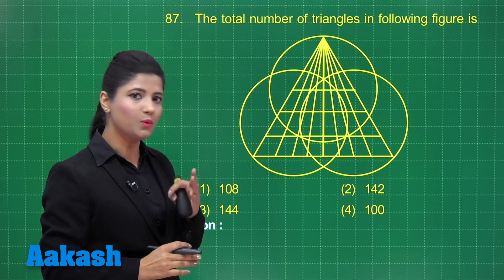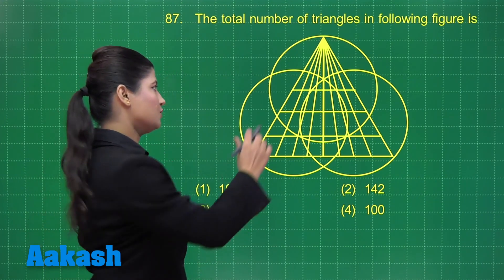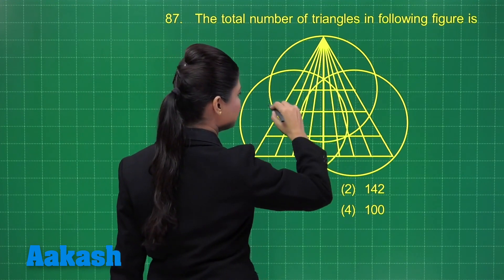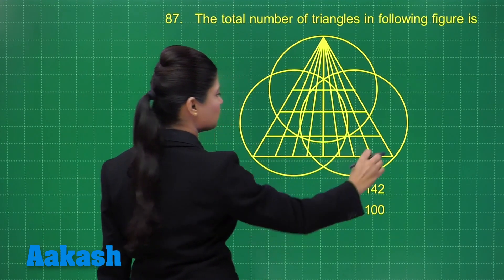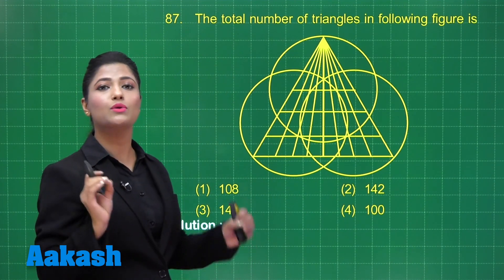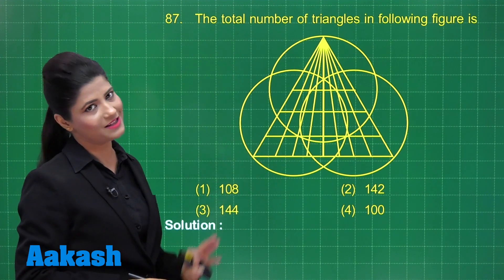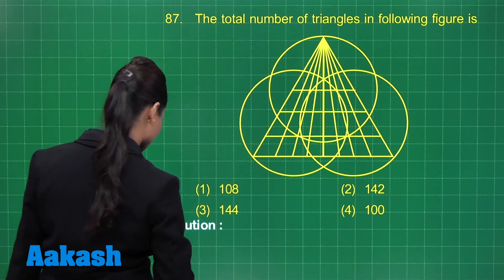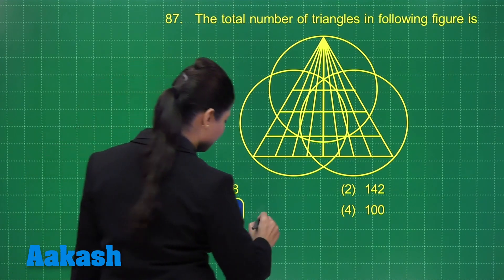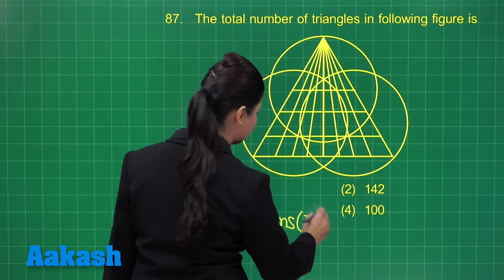So, 9 times 8 was 72. 72 divided by 2 is 36. So 36 triangles will be there on this line. The same follows for these 4 line segments. That means 36 into 4, you have total 144 triangles present in this figure. You get a clear answer for this question as option number 3, that is 144. I hope it is clear to you.